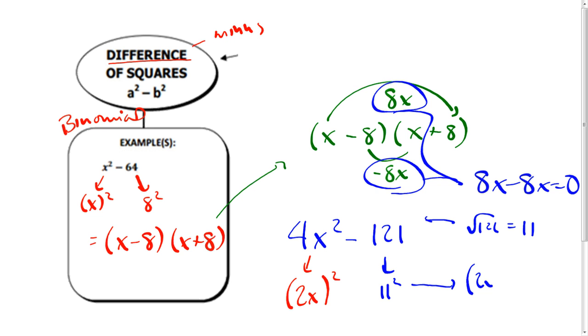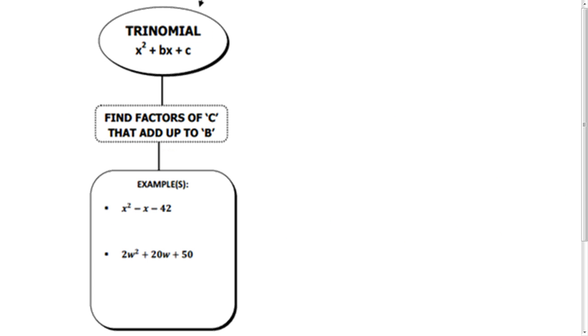Now there are two different types of trinomials. This one, the special case, is where I've got a 1 out front. What ends up happening then is that my product is negative 42 and my sum is going to be negative 1. Look for your factor pairs, so the larger number's gonna be negative since my sum is negative.